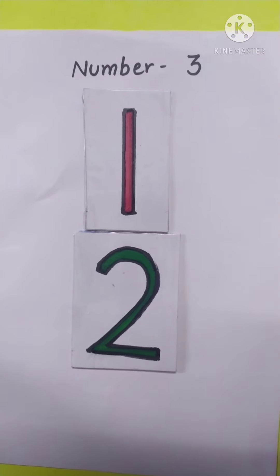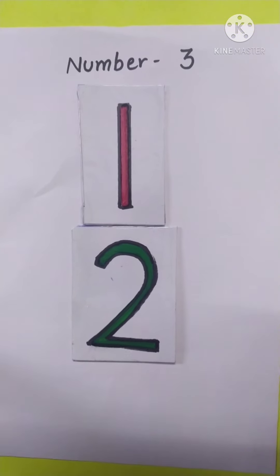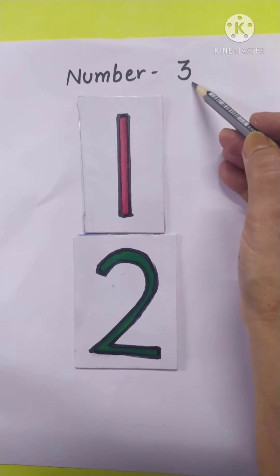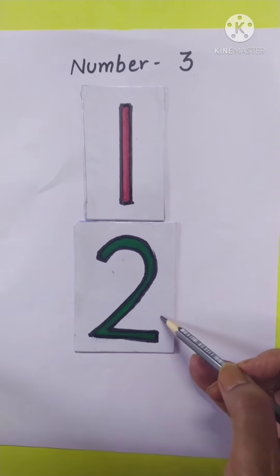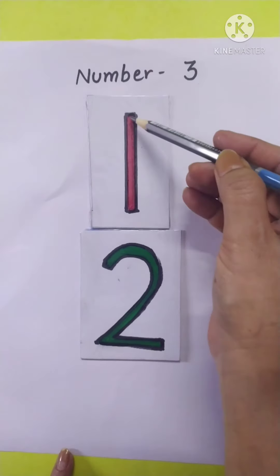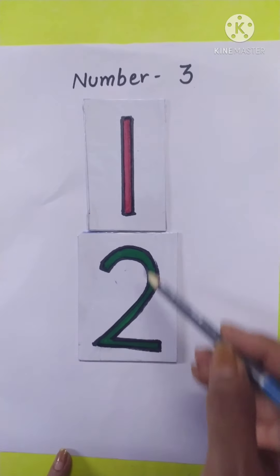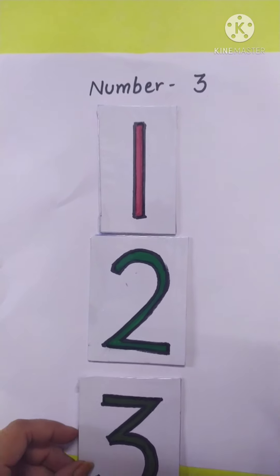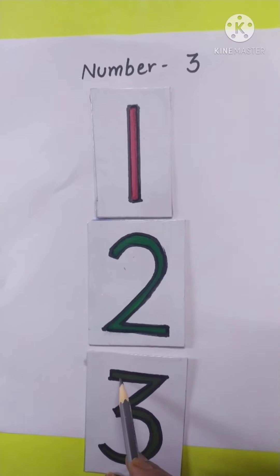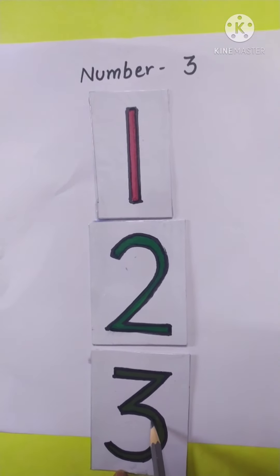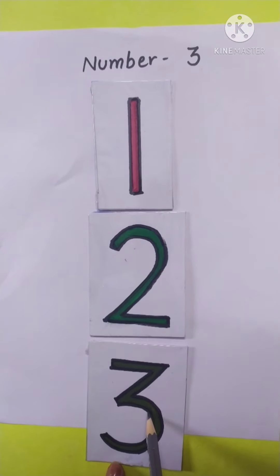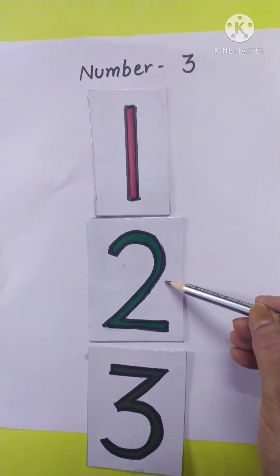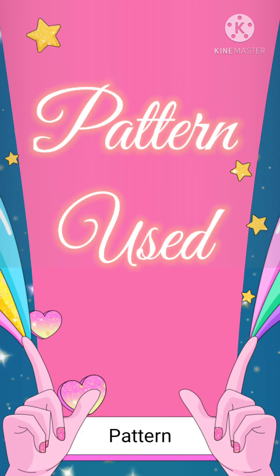Hello dear kids, welcome back to Number Work! Today we are going to do the next number — number three. Let us revise: what comes after number two? One, two — and after number two it comes number three. This is number three. Very good — one, two, three!